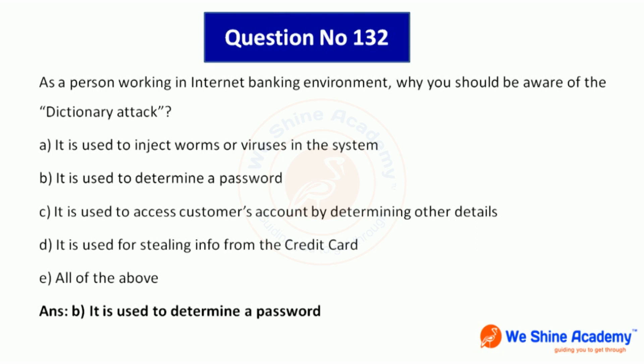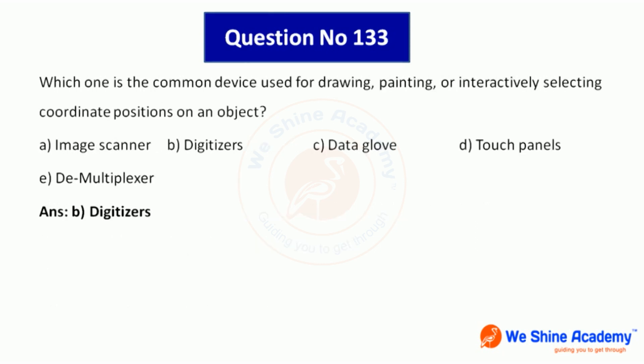Next, question number 133: Which is the common device used for drawing, painting, or interactively selecting coordinate positions on an object? The device name is a digitizer.